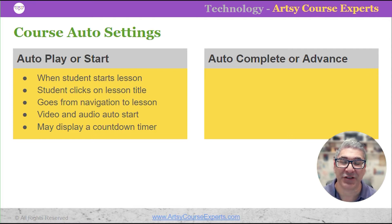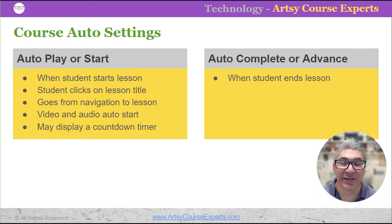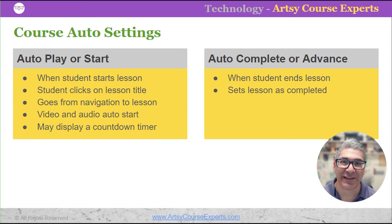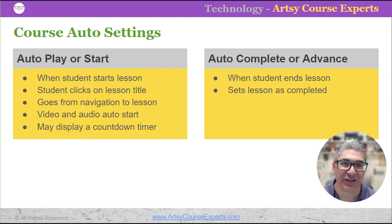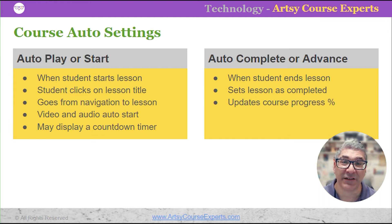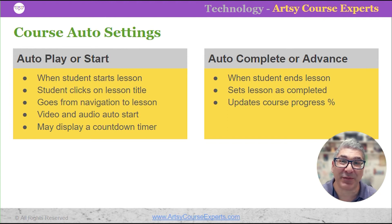On the flip side, at the end of the video lesson there's the auto complete or auto advance feature available on some LMSs. When the video ends, if this feature is enabled, it checks off that the particular lesson was completed. You'll see a green checkmark in your lesson tracker, and it'll update the overall course percentage — for example, moving you from 35% to 40% because that video just auto completed.